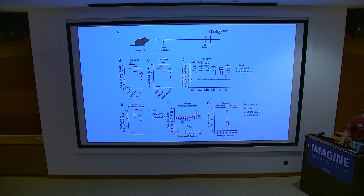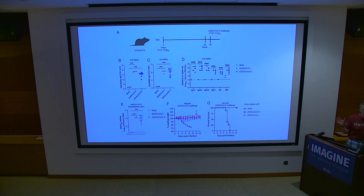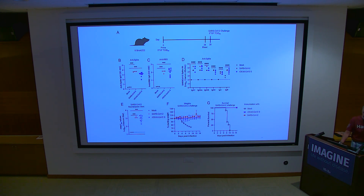This OC-43 chimeric virus has been classified as BSL-2. We just submitted it for publication. Once accepted, I'll give it to anybody in the world who has permission to use it. This is a much better virus for neutralization assays, you don't need BSL-3 conditions, and it's going to be cheaper.